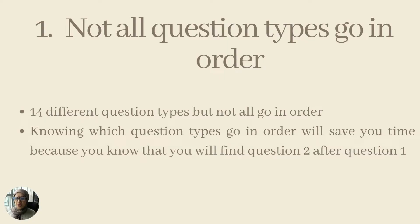The first IELTS reading strategy is that you need to know that not all question types go in order. There are actually 14 different question types in the IELTS reading section, so this is kind of a gamble — you don't know what type of question you will get. Knowing which question types go in order and which do not will save you a ton of time finding the answers. If a question type goes in order, you'll find the answer to question one in paragraph one, and question two following from there. Check the description box below for a list of question types that go in order and some that do not.